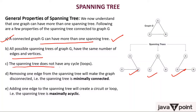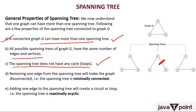Third, a spanning tree does not have a cycle — a tree cannot have a cycle. Fourth, removing one edge from a spanning tree will make the graph disconnected. For example, removing edge B will disconnect it. That is, a spanning tree is minimally connected — the moment you remove even one edge, it becomes disconnected.